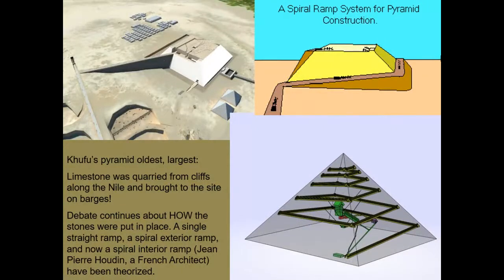There are a number of different theories about how these enormous structures were built. One early analysis revealed that if you took the Great Pyramid apart, you'd have enough stone to build a wall at least six feet high encircling the entire nation of France — an enormous amount of stone. The Egyptians didn't have the wheel, so they most likely used wooden-railed sleds.